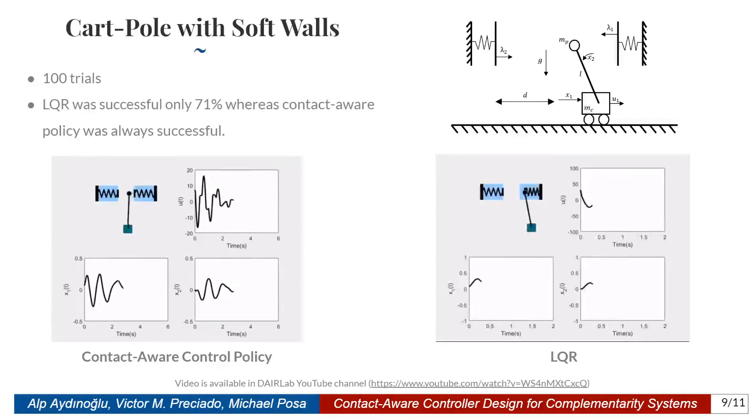In this example, we want to compare two different controllers. The first one is found by linearizing the system and defining a gain matrix K using the LQR method. The second one is found by doing our non-smooth approximation method and finding an LCS approximation of the system, then using the BMI approach we just described to find the controller. To be fair, we constructed 100 different initial conditions that are randomly sampled. We tried this initial condition set for both controllers. As you can see, the LQR was successful only 71% of the 100 cases, but our contact-aware policy was always successful. On the bottom, you can see one case from the same initial condition where our policy was successful and LQR failed. This tells us that just a linear approximation is not always enough, and sometimes it's actually important to keep the non-smooth structure of the dynamics.